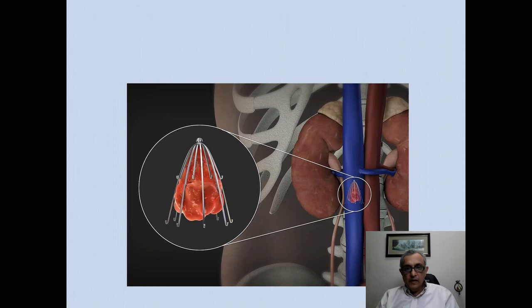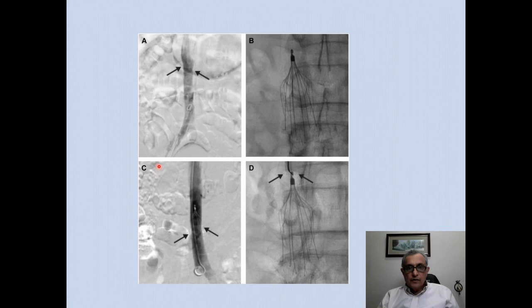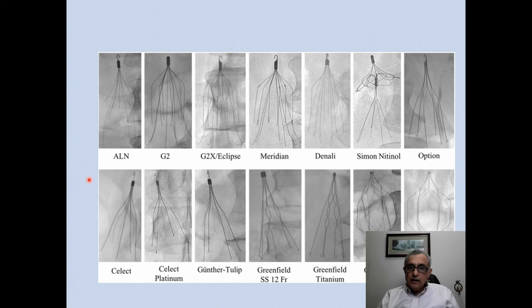Pulmonary embolism carries a high mortality. In patients with poor cardiac reserve, metallic devices called inferior vena cava (IVC) filters are inserted into the inferior vena cava to trap thrombus going to the pulmonary arteries. Filters can be inserted either from the inferior or superior vena cava, and there are many different kinds on the market, all designed to trap thrombi within the struts to reduce the risk of severe PE.